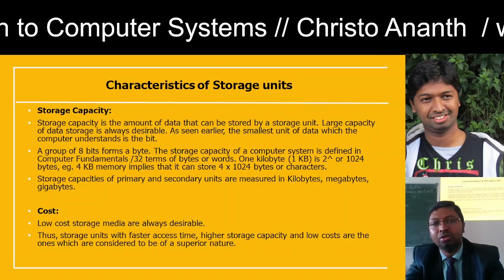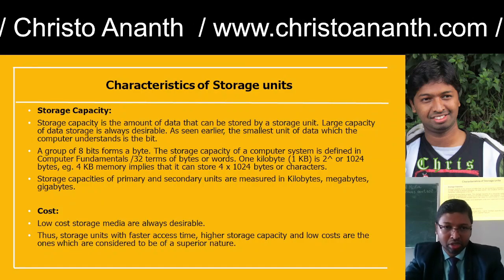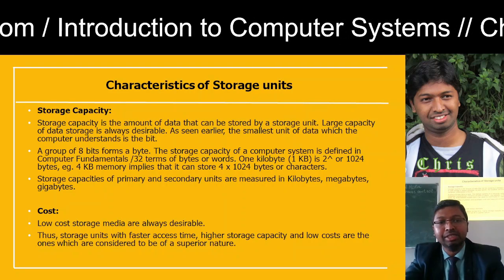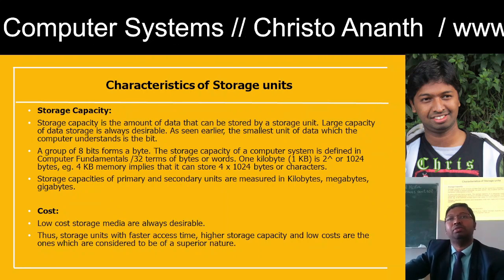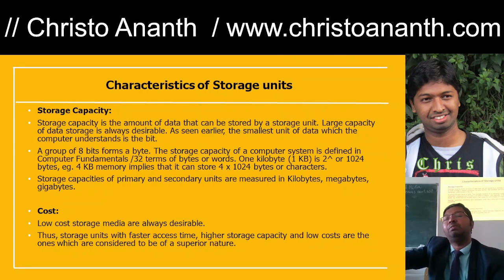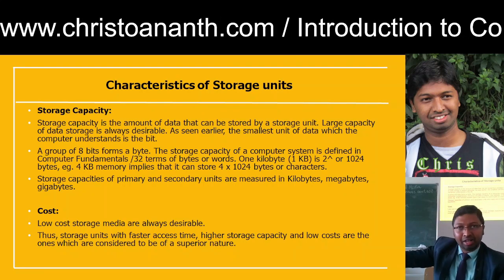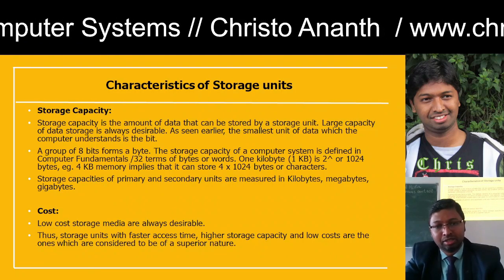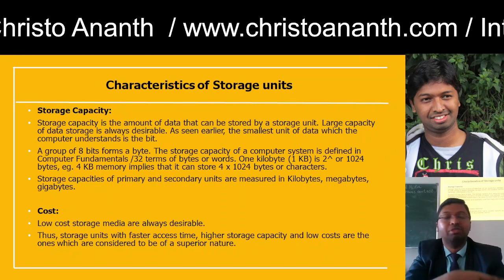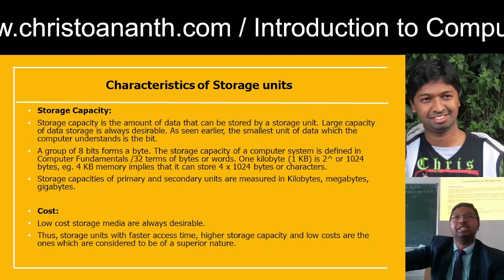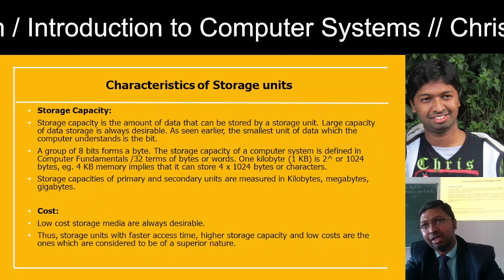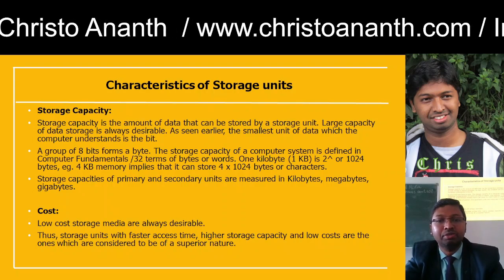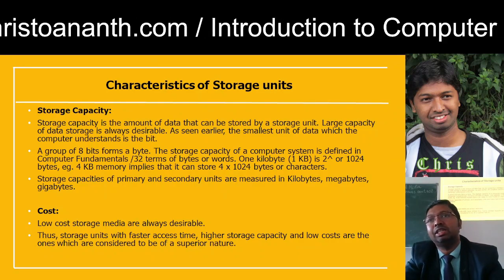Storage consists of primary as well as secondary units measured in kilobytes, megabytes, and gigabytes. 1 KB = 1024 bytes, 2 KB = 2×1024, 4 KB = 4×1024, and so on up to 1 MB, 1 GB, 1 TB. Low cost is what everybody wants. Earlier storage devices were very costly but now they are very cheap. Storage units with faster access time, higher storage capacity, and low cost are considered superior.